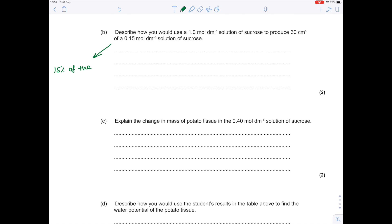If we're producing 30 cm³ in total, well 15% of that must be made up of the sucrose solution, and 85% of it must be made up of water. So then it's a simple matter of doing 15% of 30 to get 4.5 cm³ as your answer—that's the amount of sucrose required.